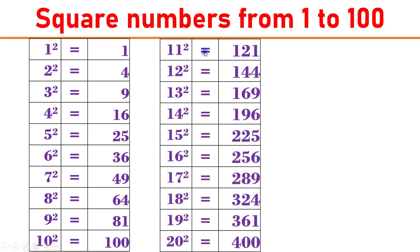11 square equals 121. 12 square equals 144. 13 square equals 169. 14 square equals 196. 15 square equals 225.